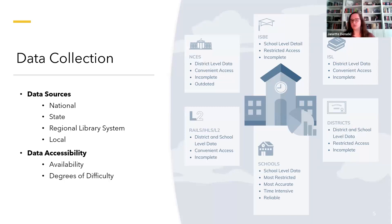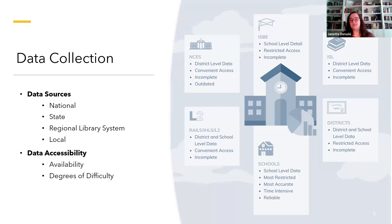Rails also has access to some location and staff data through L2, the statewide library directory and learning calendar. It's important to note that not all school libraries are represented in L2, and it also relies on members to keep their information up to date. Local level data from districts and schools has the best potential for providing the greatest detail, but it's also the most restricted and time intensive to collect. District websites and staff directories are helpful and easily accessible, but they can become outdated or fail to reflect vacancies and complex staffing situations. School librarians are the very best source of data at this level, but we know you're very busy people — which brings me to our next consideration: data accessibility.